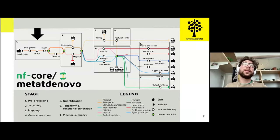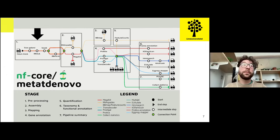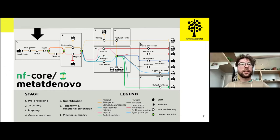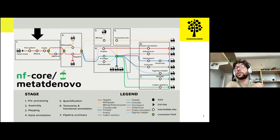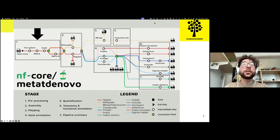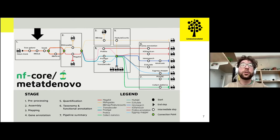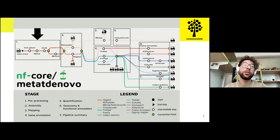If I want to get inside the pipeline and describe it, we have different stages. The first is the preprocessing stage: we start by cleaning the reads and checking their quality. Then we use a program called bbduck to remove all contaminants. The user can provide their own fasta sequences as contaminants, but we provide Silva, which is mainly used for removing rRNAs — the contaminant factor you don't want when working with metatranscriptomics, since you want to work mainly with genes that can be functionally and taxonomically annotated.